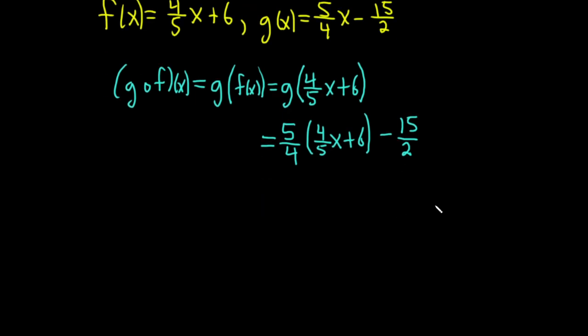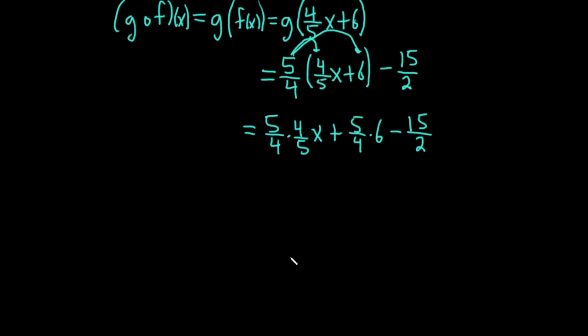Alright. Let's go ahead and distribute. So 5 fourths times 4 fifths x. Alright. So these cancel. So we have x.